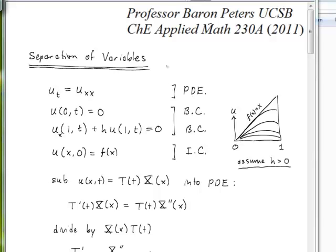In this lecture we will solve the heat equation using the method of separation of variables, which works for homogeneous partial differential equations with homogeneous boundary conditions. We will use a Dirichlet type boundary condition at x equals zero.